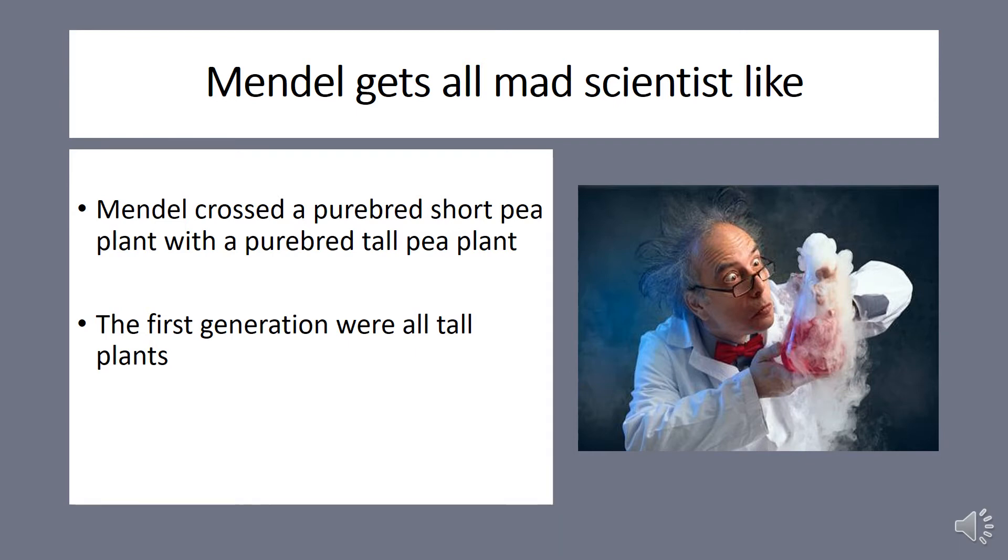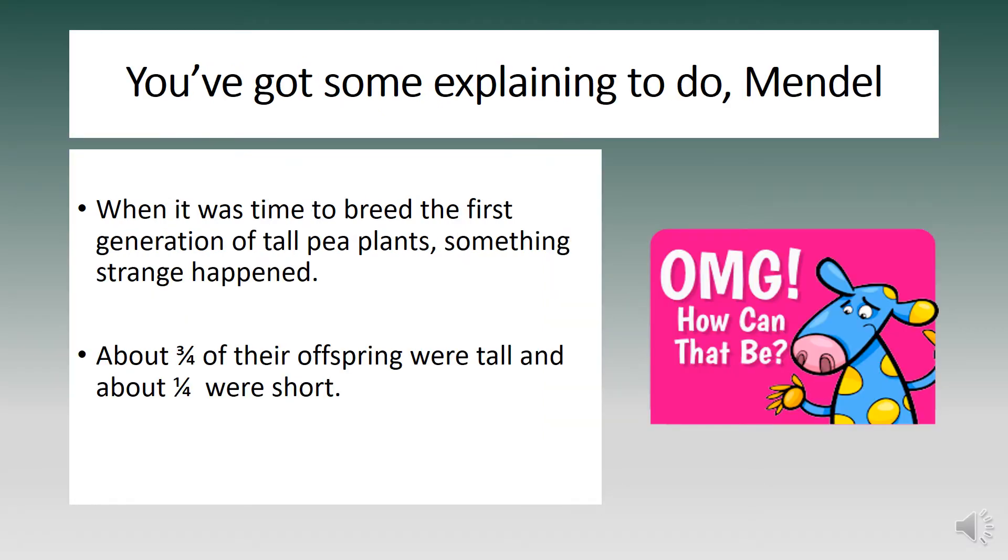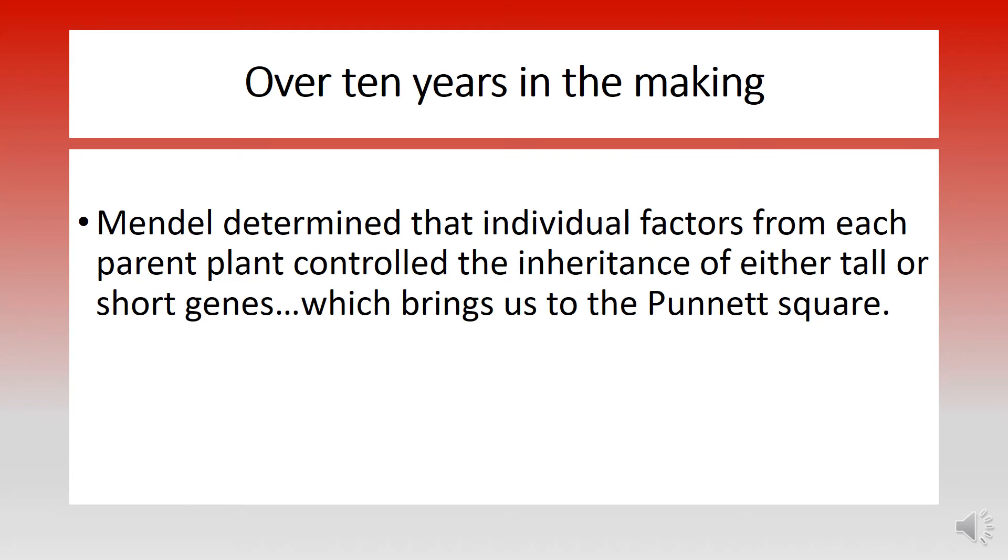Next, he decided to breed the first generation of pea plants and something strange happened. About three-fourths of their offspring were tall and about one-fourth were short. Mendel really loved his peas, so for the next 10 years he kept breeding pea plants and determined that individual factors from each parent plant controlled the inheritance of either tall or short genes.